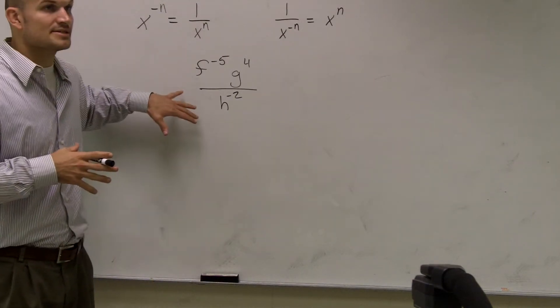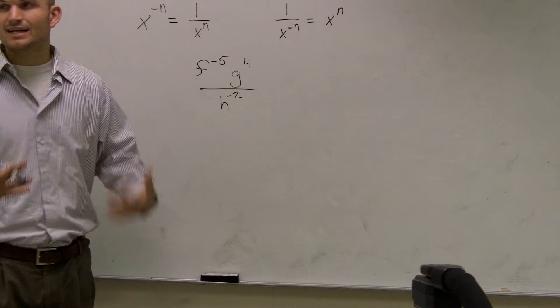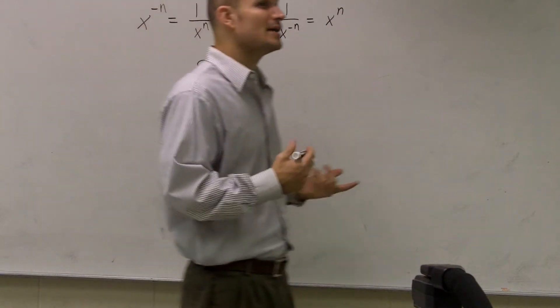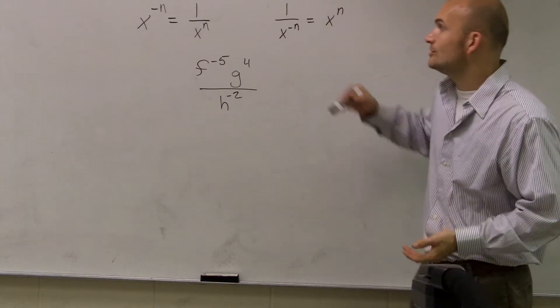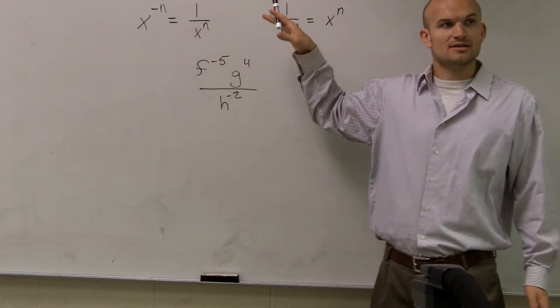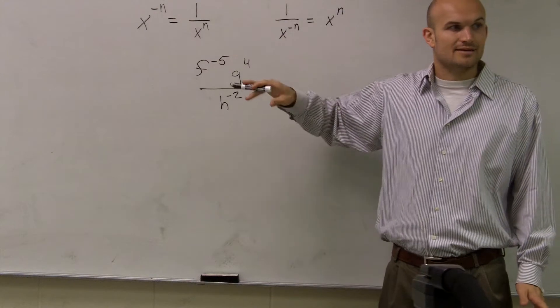So what we need to make sure we do is we don't have any negative exponents. Remember, we talked about a monomial that does not have a negative exponent. So what I'm going to use is my rules of negative exponents to get these to be non-negative.